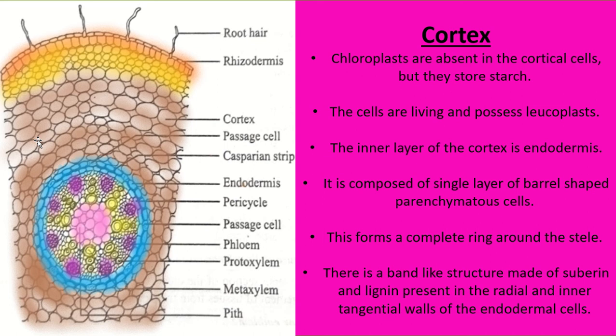Chloroplast is absent in cortical cells. Whereas in the stem transverse section we saw chloroplast is present, here instead of chloroplast, leucoplast is present, and these cells are living and store starch. The inner layer of cortex is endodermis. This blue-colored layer in the picture represents the endodermis, which is composed of a single layer of barrel-shaped parenchyma cells.